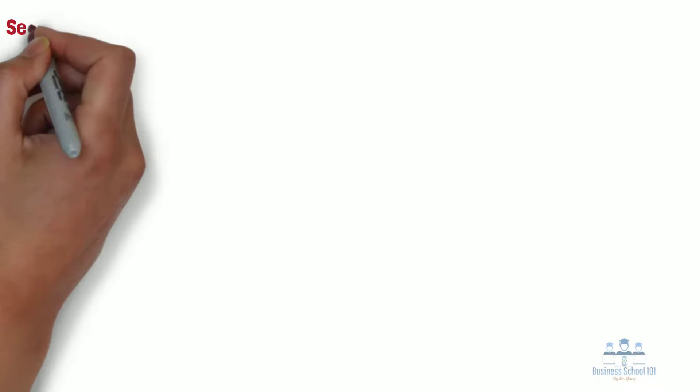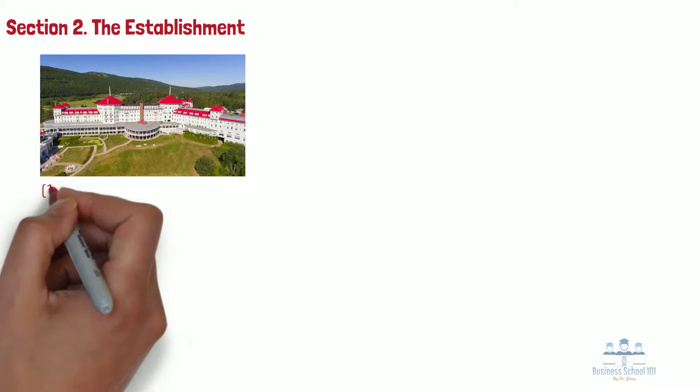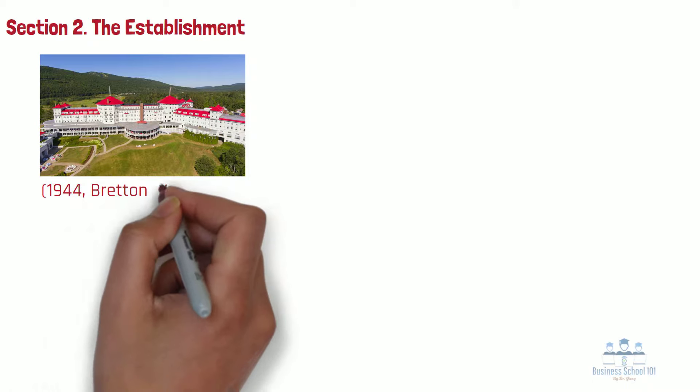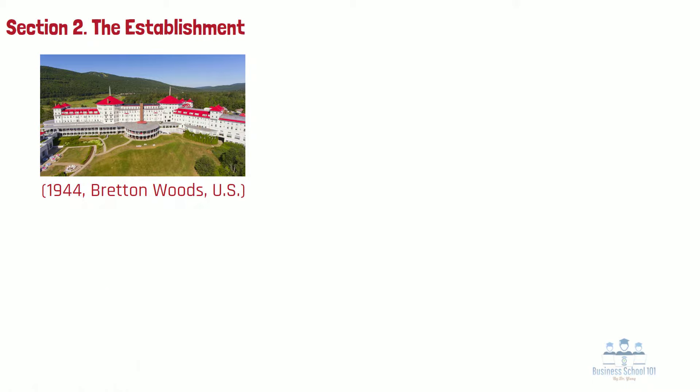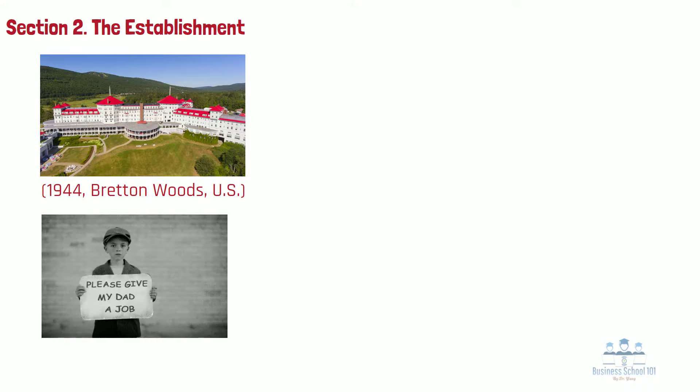Section 2: The Establishment. In 1944, at the height of World War II, representatives from 44 countries met at Bretton Woods, New Hampshire, to design a new international monetary system. With the collapse of the gold standard and the Great Depression of the 1930s fresh in their minds, these statesmen were determined to build an enduring economic order that would facilitate post-war economic growth.